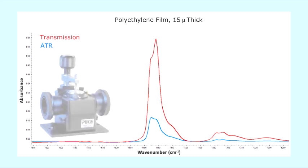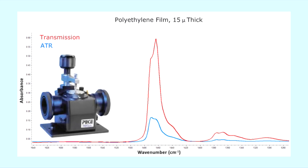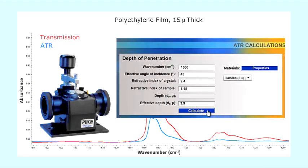The Pike Miracle Single Reflection Diamond ATR was used. Using Pike's FTIR calculator, the effective penetration at 1050 wavenumber is 3.9 microns for this film.